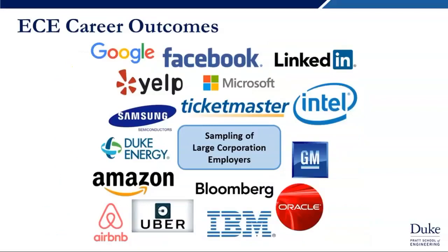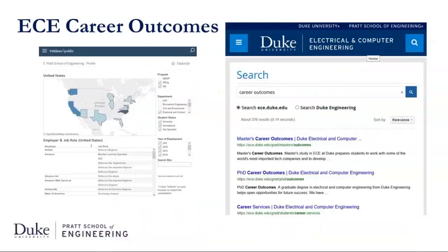This slide shows a sampling of the large corporations that some of our students went to — a lot of the names you're probably thinking about if you're interested in software or hardware, like Facebook and Intel. You might be surprised by some like General Motors, but smart cars are a big deal these days and some students went there to work on related software. If you want more detailed information, you can search for career outcomes on ece.duke.edu to find a filterable Tableau tool with all the data.